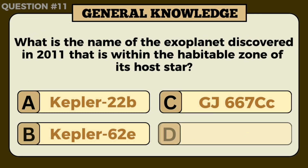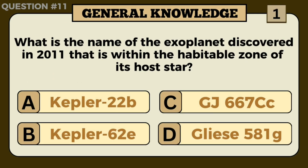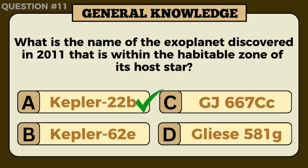What is the name of the exoplanet discovered in 2011 that is within the habitable zone of its host star? Answer: Kepler-22b.